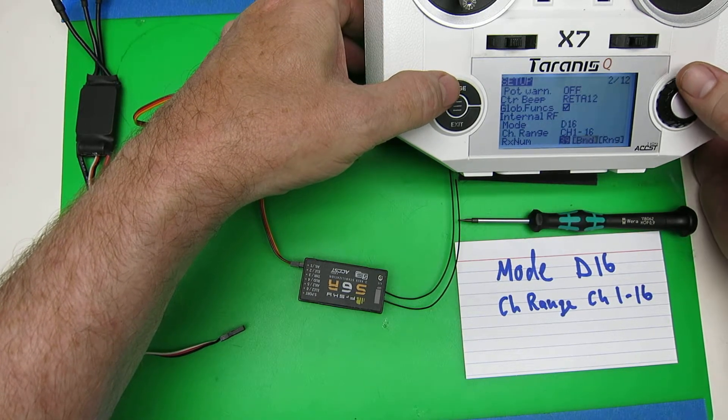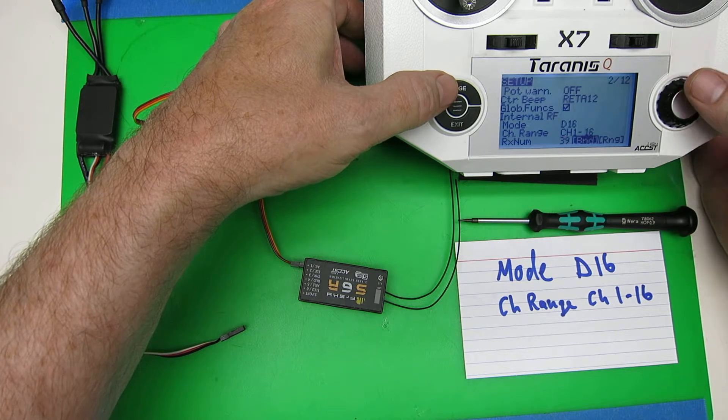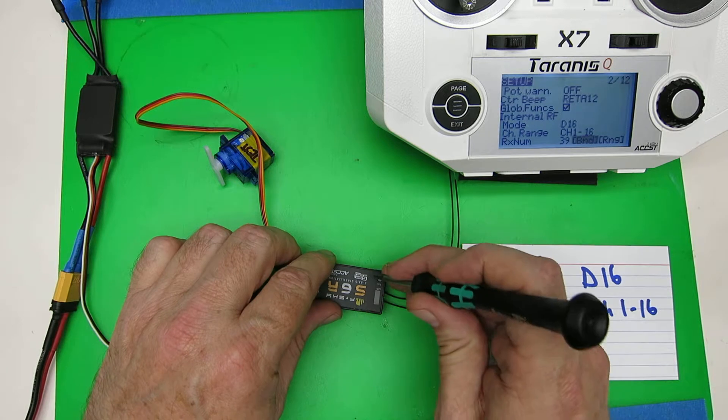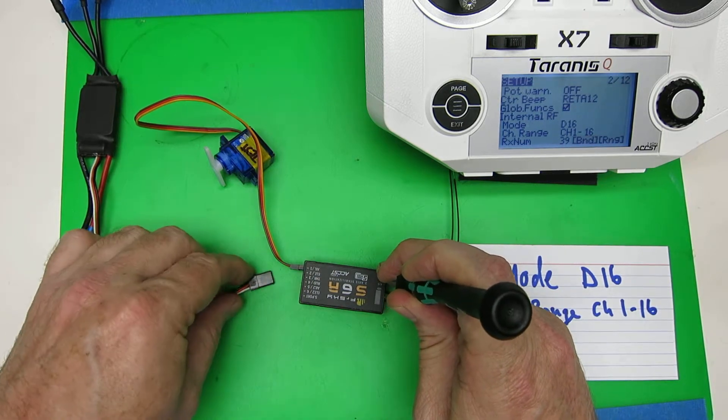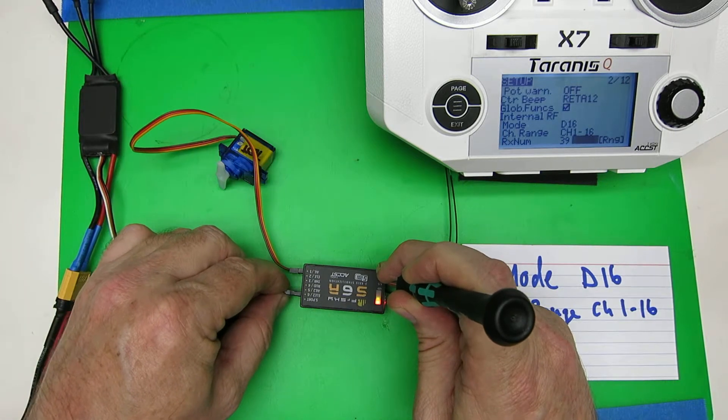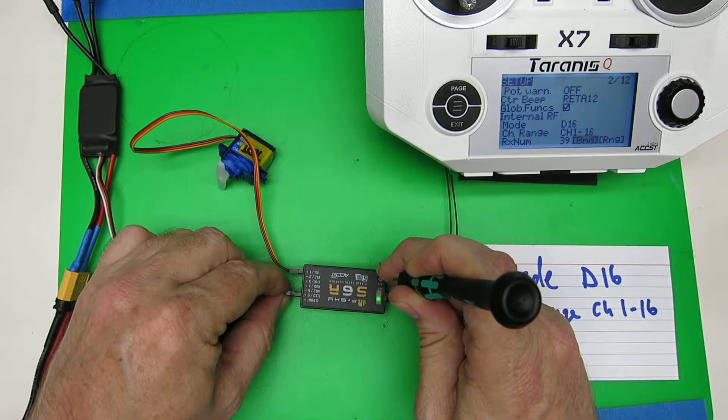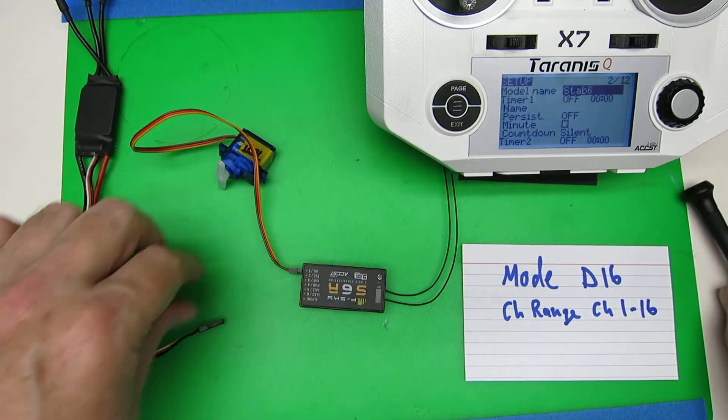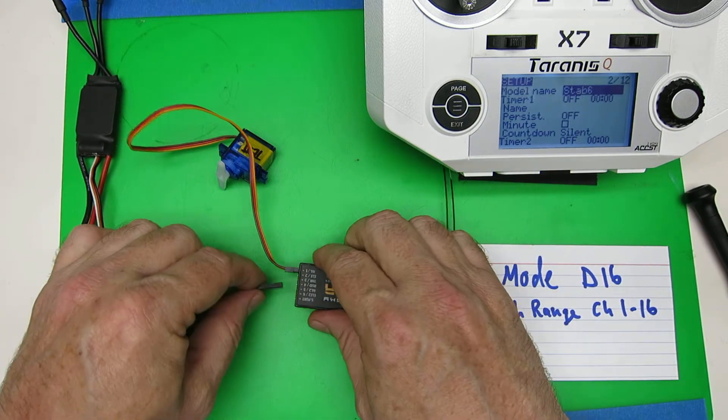Be sure you have channels 1 through 16 set. Click bind, hold the failsafe down. Remember that the negative is on top here. We get the red flash, so my bind is good. Let's connect.